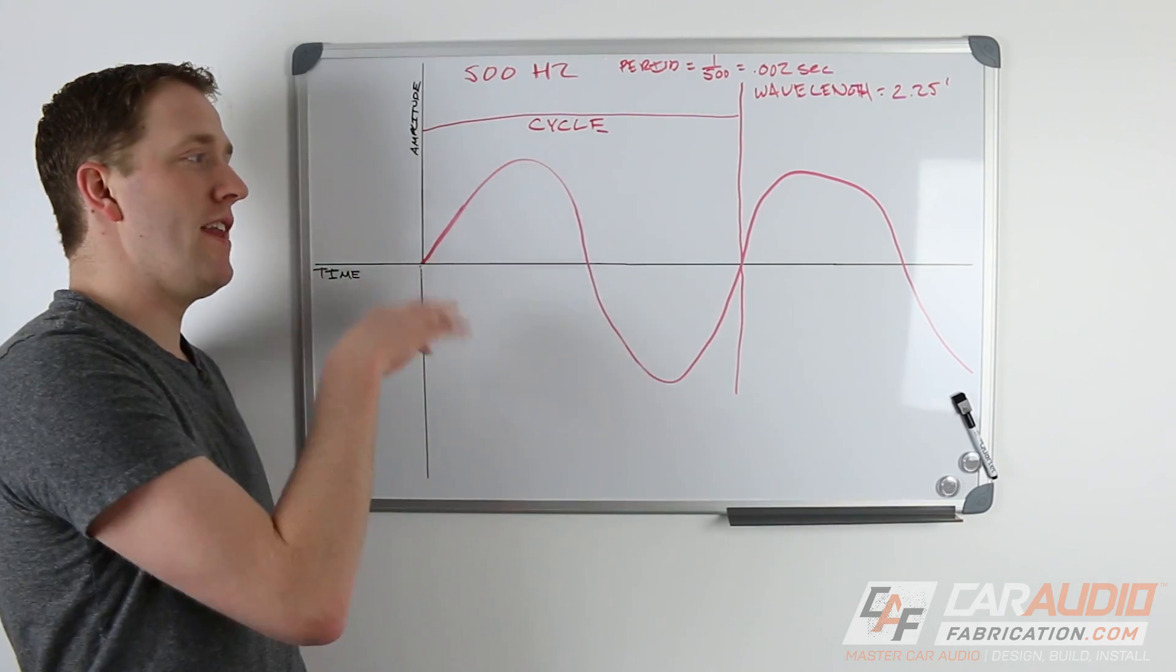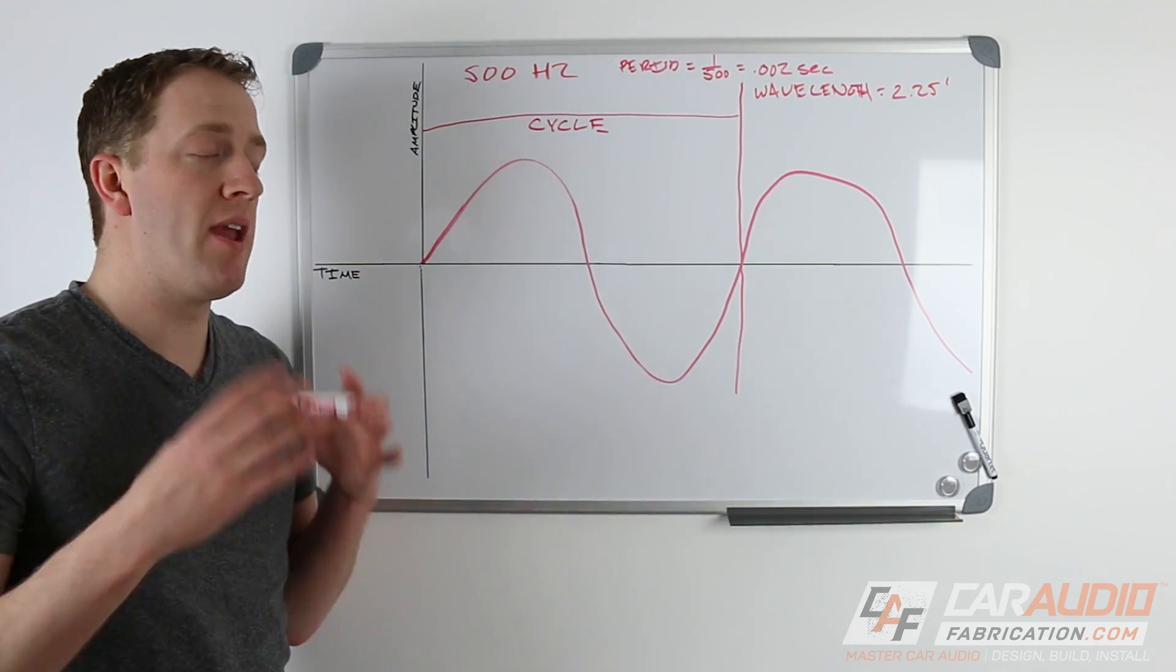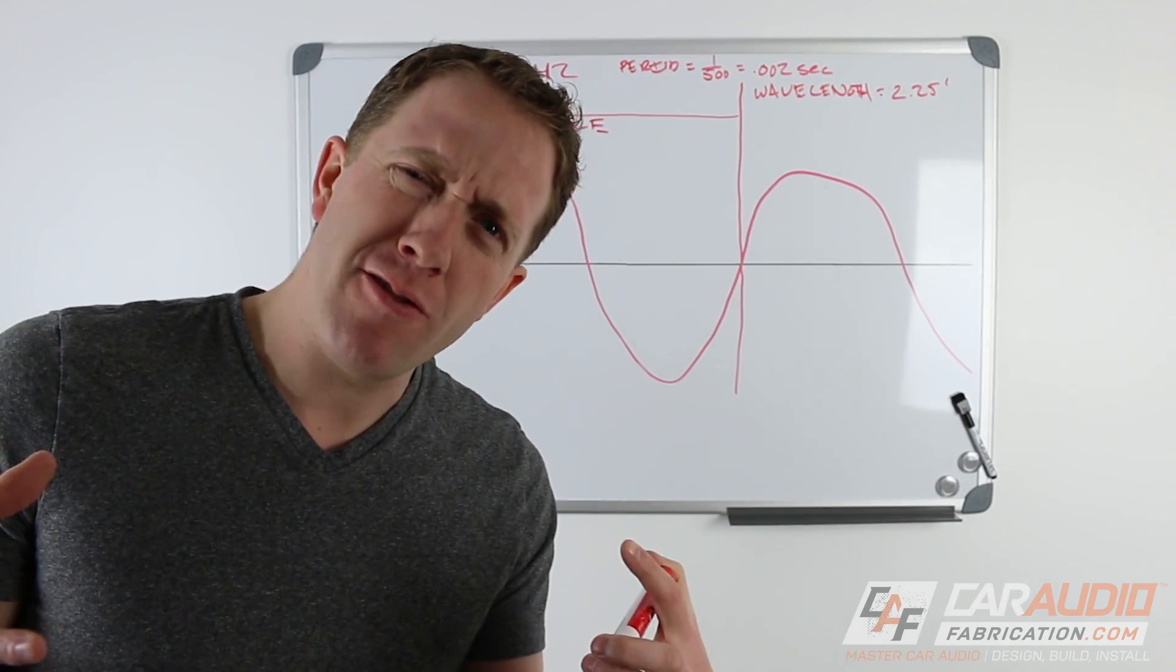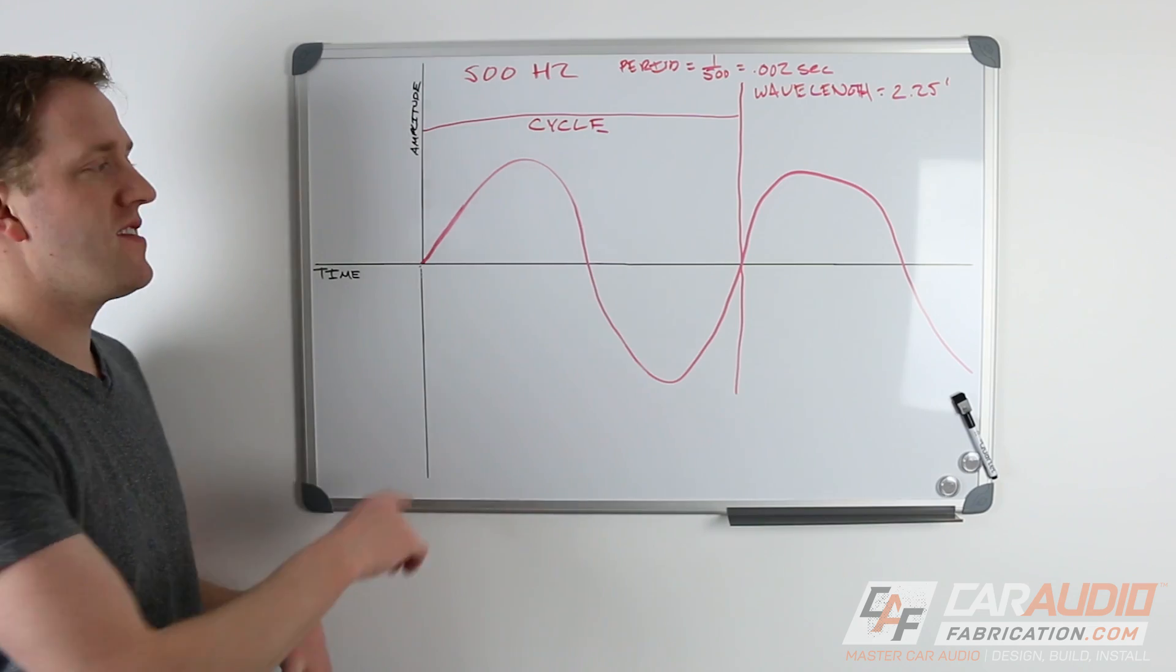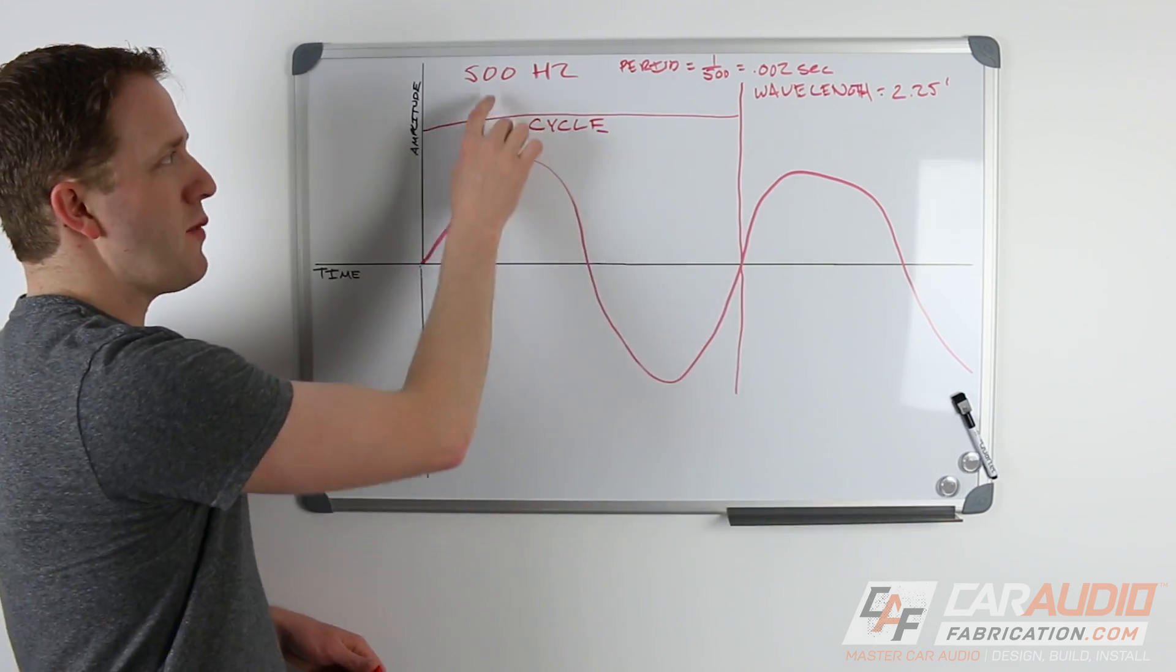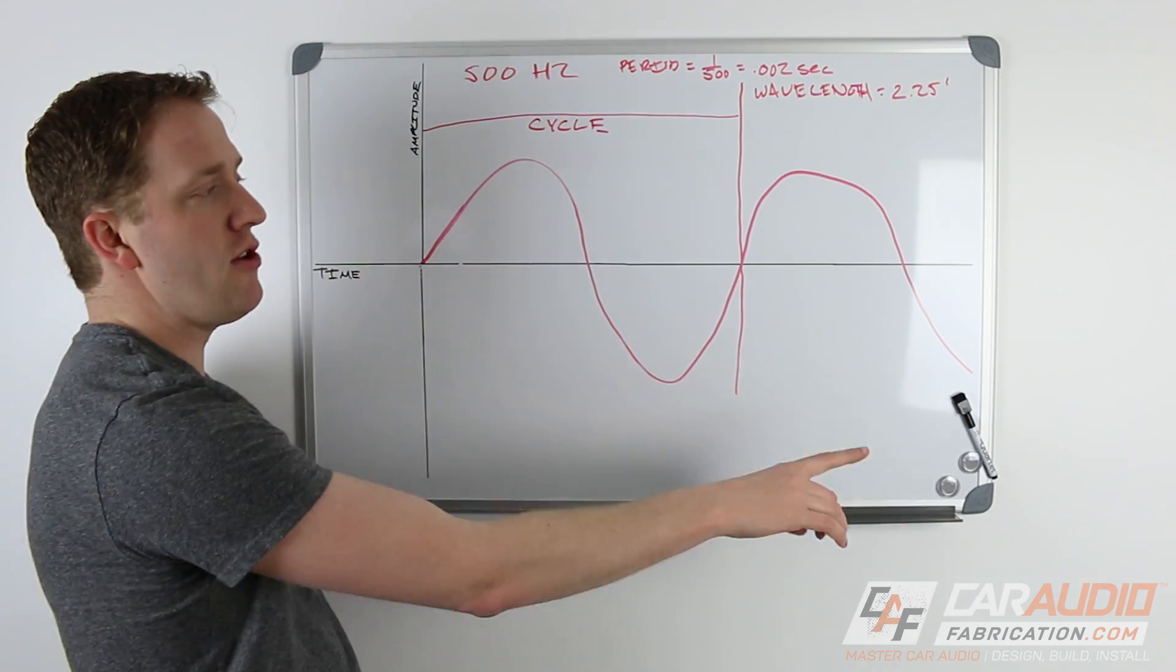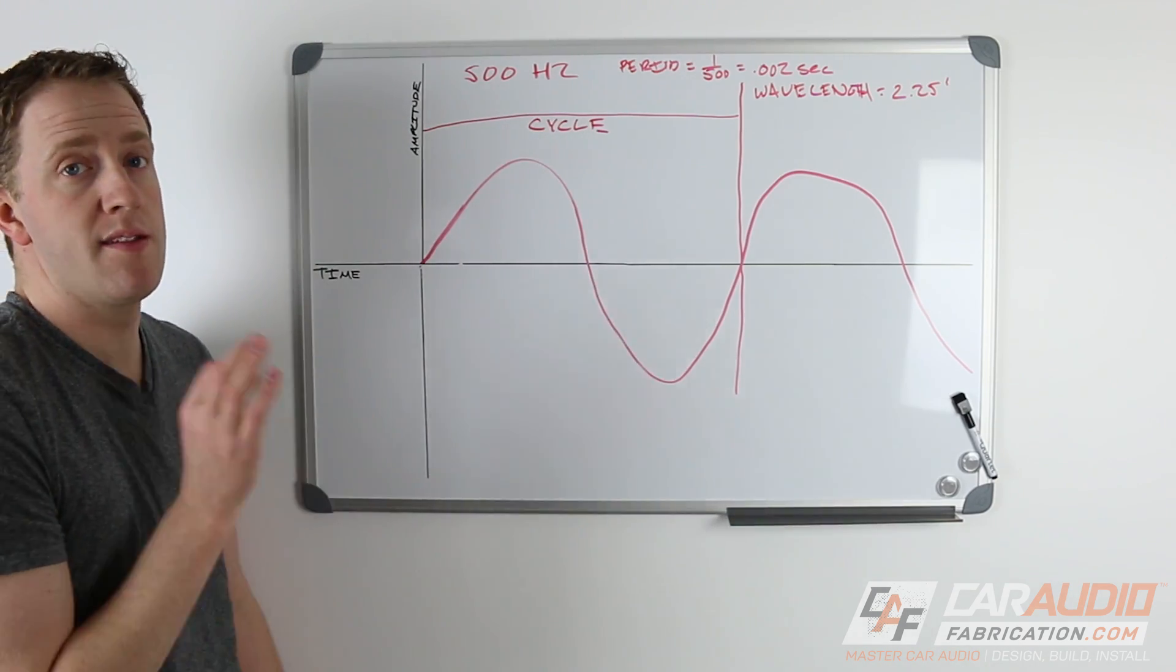Now up until now, we've been talking about a sine wave. A sine wave is considered a periodic wave. Now what does periodic mean? Periodic means that this wave completes in a repetitive cycle. In other words, as long as we keep playing a 500 hertz test tone, it's going to continue being the same waveform. It's periodic.